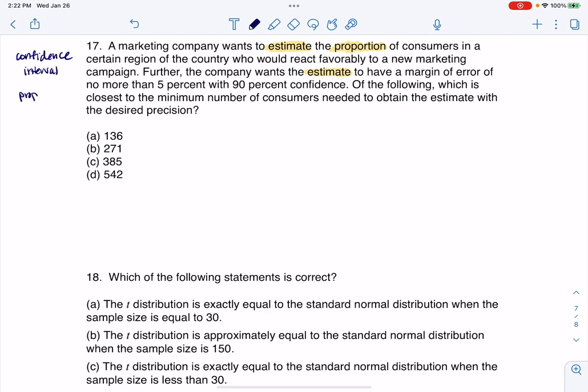All right, so I'm going to be in prop land, which means I'm going to have a Z star critical value. Further, the company wants the estimate to have a margin of error of no more than 5% with 90% confidence. Of the following, which is the closest to the minimum number of consumers needed to obtain this estimate with the desired precision.